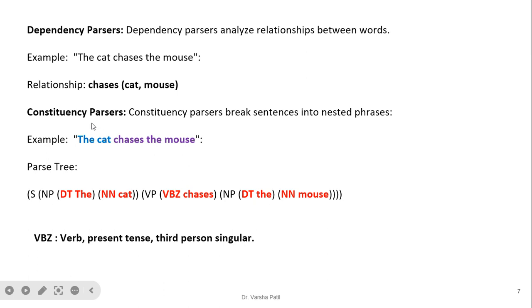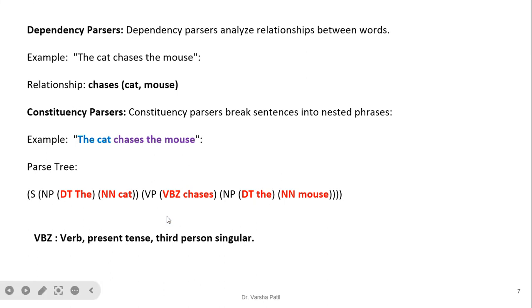The constituency parser breaks a sentence into nested phrases. For example in 'the cat chases the mouse', there are two phrases: 'the cat' as the noun phrase and 'chases the mouse' as the verb phrase. The NP 'the cat' has 'the' as a determiner and 'cat' as the noun. The VP starts with VBZ — a verb in present tense, third person singular — followed by another NP 'the mouse', where 'the' is a determiner and 'mouse' is a noun. So the VP is formed by a verb plus an NP.